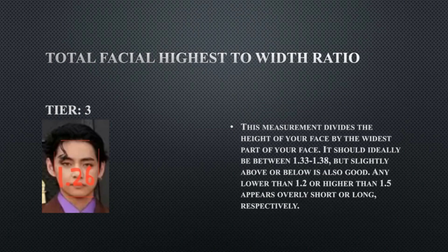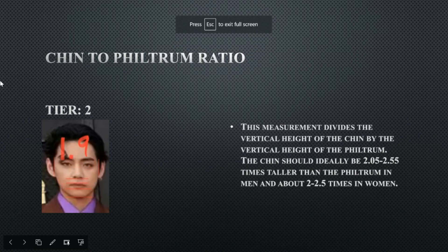His total facial height-to-width ratio — how long his face is compared to how wide — is at 1.26, which is at the lower end. This means he has a smaller, rounder face. Ideally you want at least around 1.33, and his is below that, so he has a smaller-shaped head. It's still within the normal range but not ideal.